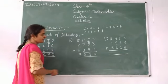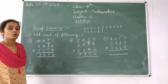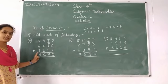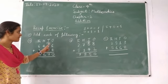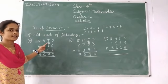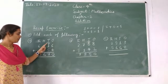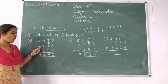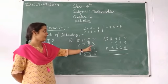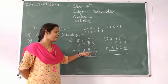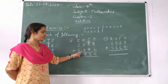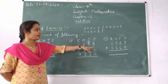Next, question C: 6,416 plus 3,254. Start from the ones place. Six plus four — we get ten. Write zero, carry one. One plus one equals two. Two plus five — we get seven. Four plus two — two numbers forward from four — we get six. Six plus three — we get nine. Next: eight plus two — ten. Write zero, carry one. One plus zero plus four equals five. Seven plus one equals eight. Two plus five equals seven.